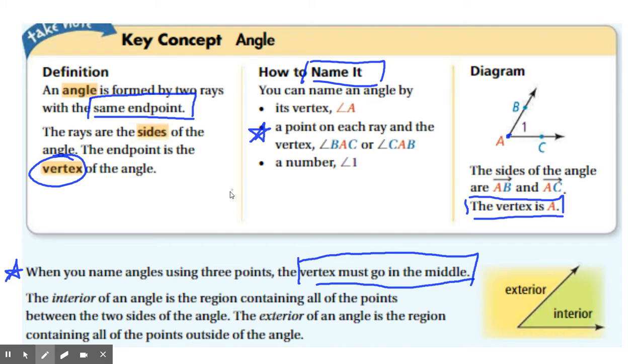Now, there are two other ways to name an angle. If the angle is all by itself, like this one is, you could just name it by the vertex, angle A.